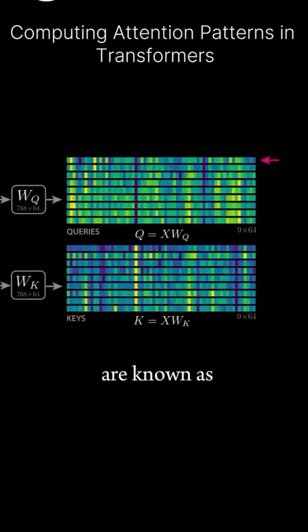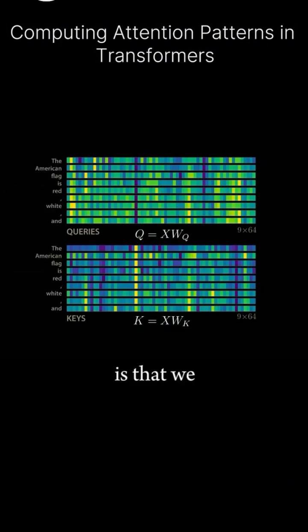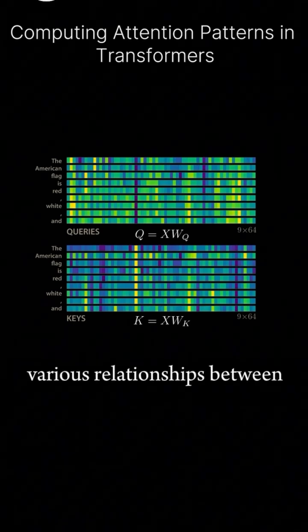The rows of our Q matrix are known as queries, and the rows of our K matrix are known as keys. The core idea of attention is that we now search for pairs of tokens that have similar queries and keys, allowing the model to learn various relationships between tokens.